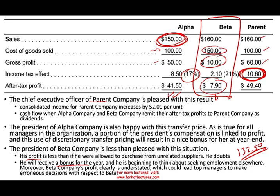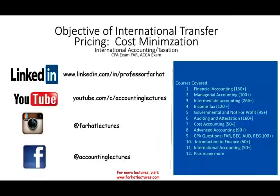Top management might also allocate fewer resources to Beta. This illustrates one key objective of international transfer pricing: performance evaluation. We want to avoid situations where Beta is unhappy and goal congruence breaks down. In the next session, we'll look at the second objective of international transfer pricing — cost minimization — focusing more broadly on taxes and other costs.